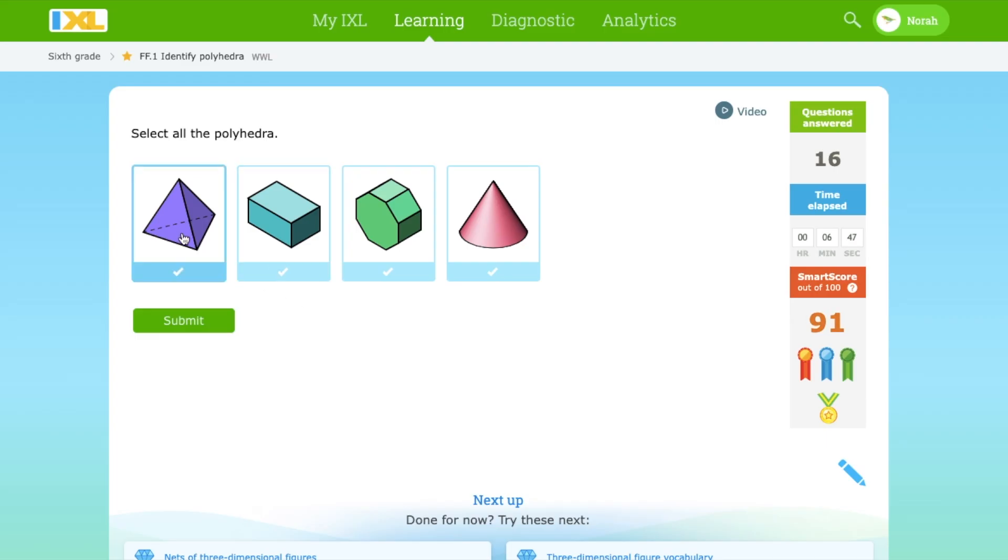This is a polyhedron. This is a polyhedron. This is, but, nope. That's not correct. There's no faces.